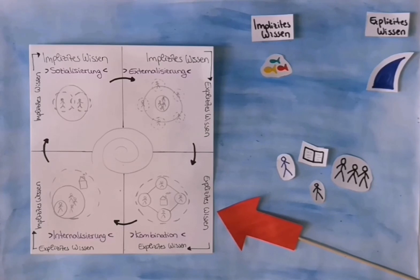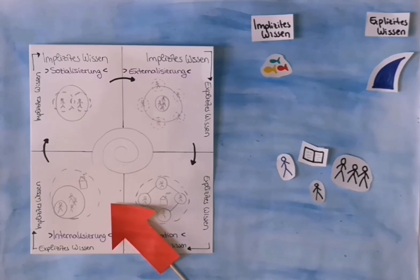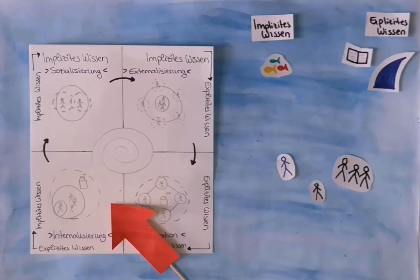The fourth phase is the internalization. It describes that this new knowledge is internalized again by the individuals. In this example, this means that the instructors do not only develop the new diving concepts in theory, but also understand and implement them. Consequently, the students practice these new exercises and learn to dive. So in this phase, the new concepts are combined with own experience and thus personal implicit knowledge is created again.